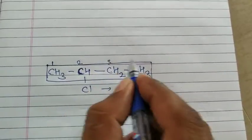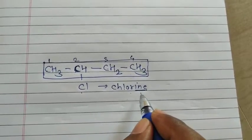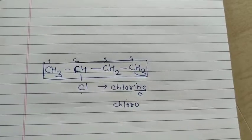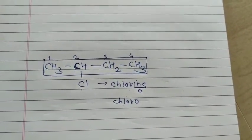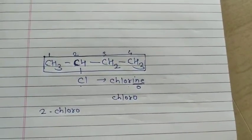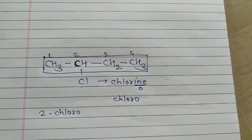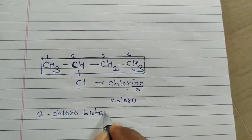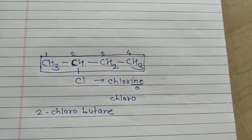From that end, the numbering goes first, second, third, fourth. The substituent is chlorine. In the IUPAC system, the '-ine' is replaced by '-o', giving 'chloro'. Write the name of the substituent with its proper number — the chlorine is at the second position, so it is '2-chloro'. Finally, write the name of the alkane: four carbon atoms are selected, giving butane. Therefore, the IUPAC name of this example is 2-chlorobutane.